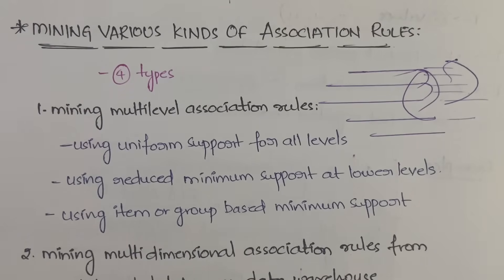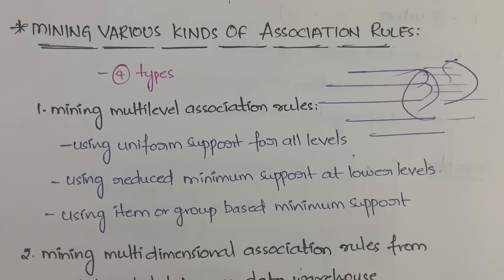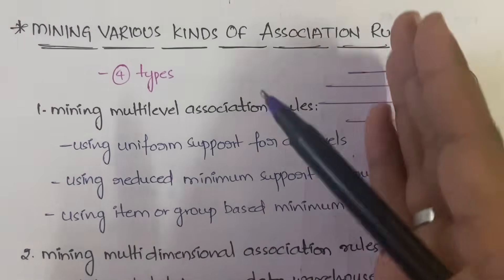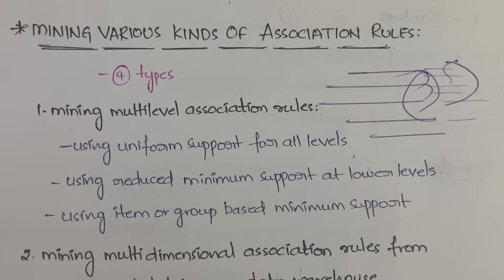The first approach is using uniform support for all levels — you set up a minimum support, say 30% or 40%, and that same value applies to all levels. You then use any algorithm like Apriori or frequent pattern algorithm and eliminate those data items whose support is less than the minimum support value.